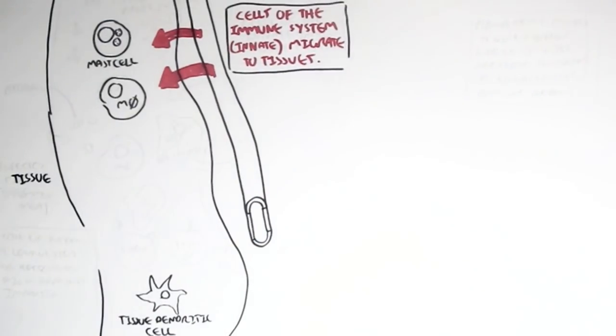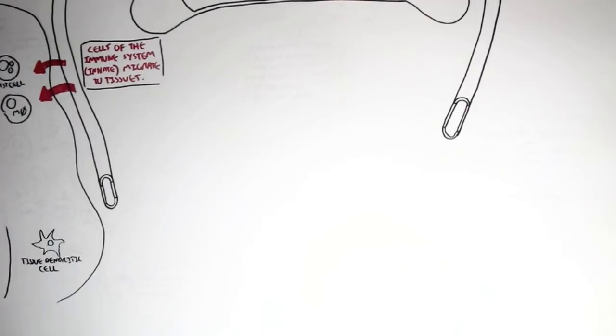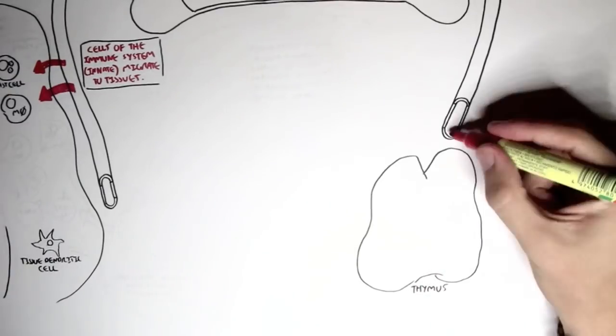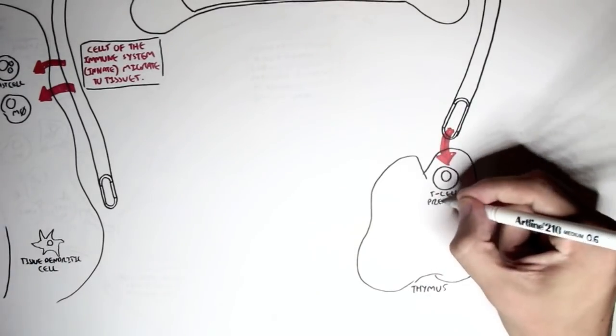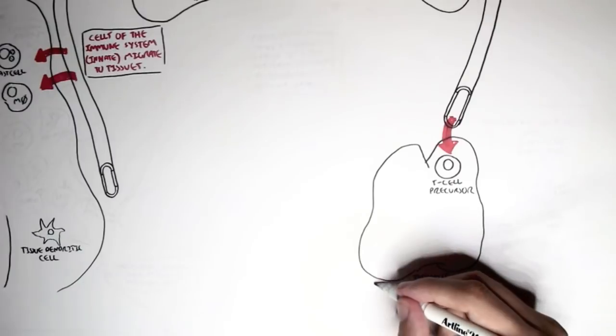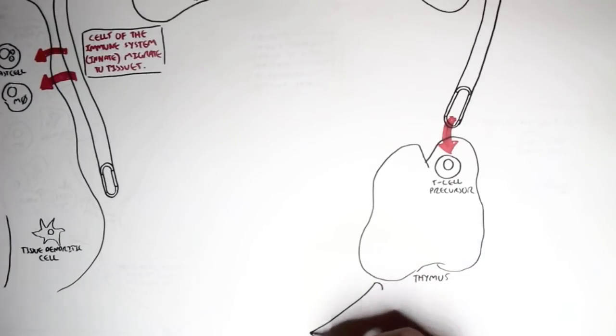And then we stopped where the lymphoid precursor, or we can even now say the T cell precursor, migrates into the thymus here, and this is where we stopped.